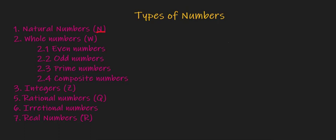What is a natural number? The set of numbers like 1, 2, 3, 4, 5, 6 — these are actually natural numbers. The natural numbers are often referred to as the counting numbers and the positive integers.